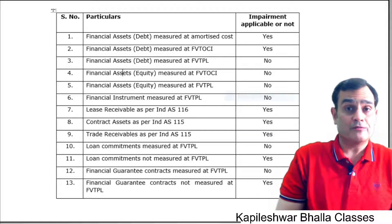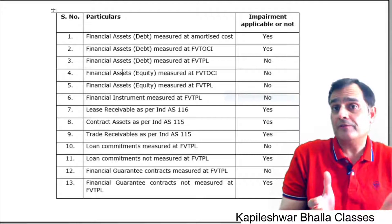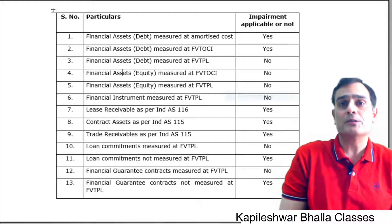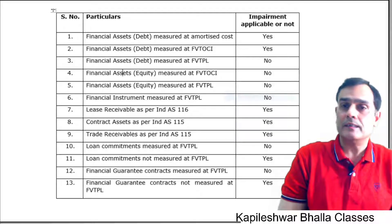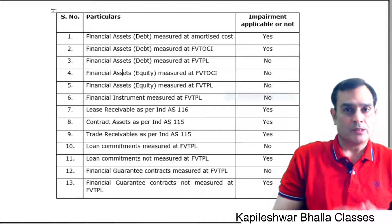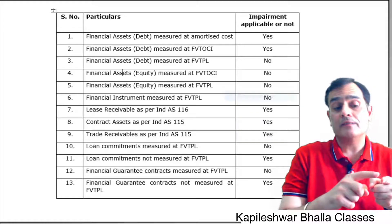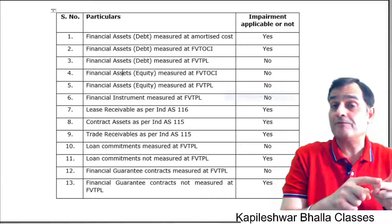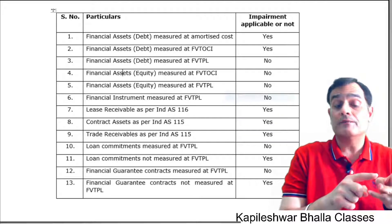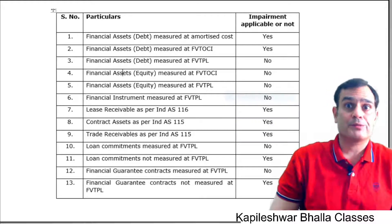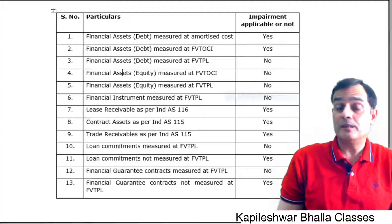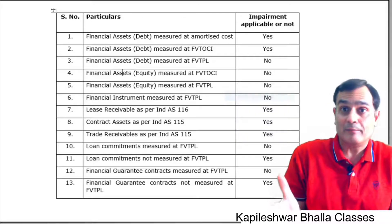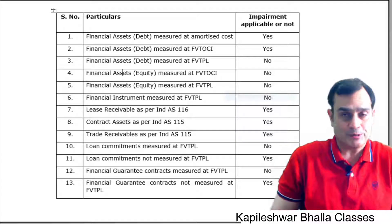This takes care of the first five items. Whether a financial asset — debt or equity — is measured at FVTPL, the ECL model does not apply. The rule: if measurement is AC, ECL applies. If FVTPL, it doesn't apply. If OCI — it depends: equity, no; debt, yes. The logic is recycling versus no-recycling. You don't need to memorize anything — just apply your logic.